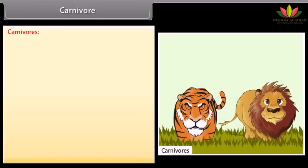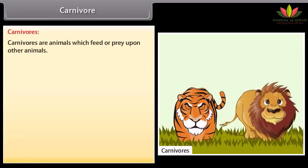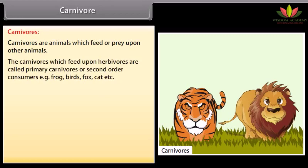Carnivores are animals which feed or prey upon other animals. The carnivores which feed upon herbivores are called primary carnivores or second-order consumers. For example, frog, birds, fox, cat, etc.